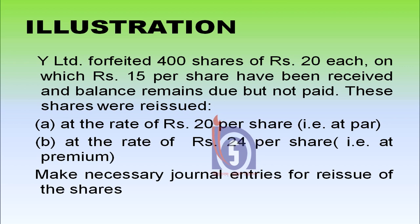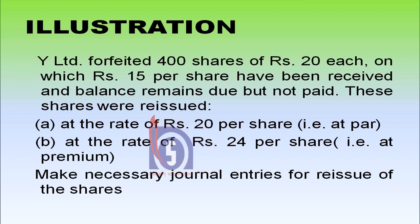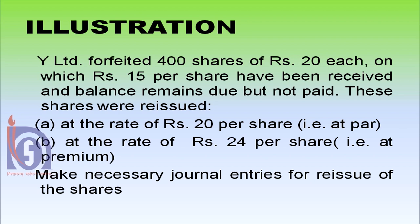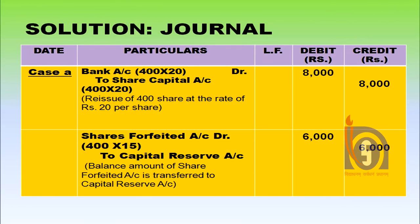Illustration: While Limited forfeited 400 shares of rupees 20 each on which rupees 15 per share have been received and the balance remains due but not paid. These shares were reissued under two cases: Case 1 — at the rate of rupees 20 per share, that means reissued at par; Case 2 — at a rate of rupees 24 per share, that means reissued at premium. Let us take Case 1 first, where shares have been reissued at par.